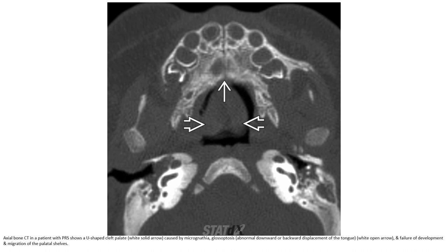Nasal bone imaging in a patient with Pierre Robin sequence shows the sequential mechanism: cleft palate caused by micrognathia, causing glossoptosis, and failure of development and migration of the palatal shelves.